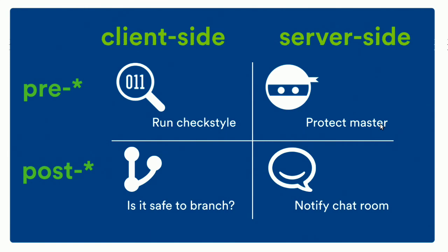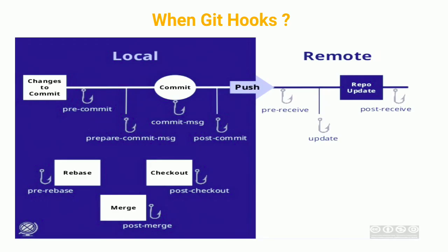As you can see in this diagram, you can differentiate between client-side and server-side. All the pre hooks run check styles and protect master, while the post ones save to the branch and notify the chat room. The full commit cycle goes: changes to commit, pre-commit, prepare-commit-msg, commit-msg, post-commit, pre-receive, update, post-receive, and then rebase, checkout, and merge. In pre-commit you can add PHP standards using code sniffers. Prepare-commit-msg allows you to alter the basic template of the commit message.